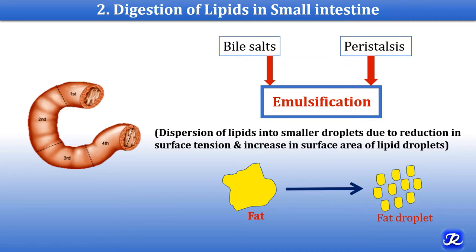Bile salts are synthesized in the liver, stored in the bile, and secreted into the duodenum, where they interact with lipid molecules and convert them into smaller fat droplets. The detergent action of bile salts is important for this emulsification process, and bile salts also prevent these fat droplets from re-forming larger molecules, keeping them in smaller form. Mechanical peristalsis also helps in the emulsification process.